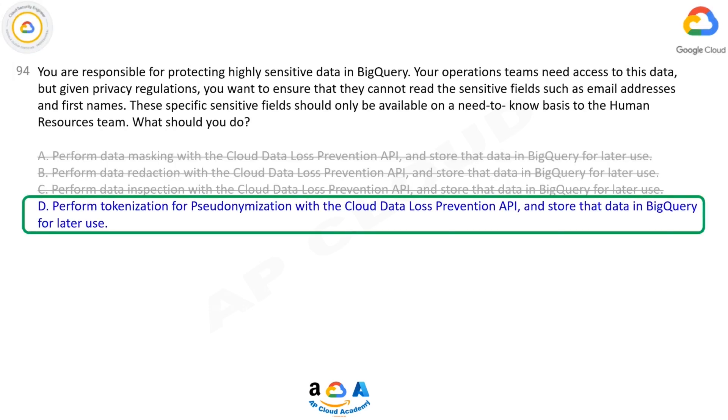Correct answer: D. Perform tokenization for pseudonymization with the Cloud Data Loss Prevention API and store that data in BigQuery for later use.